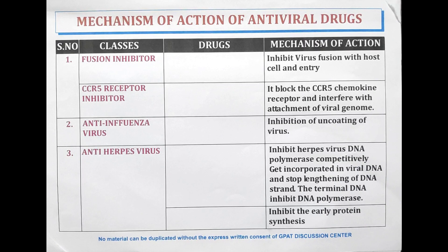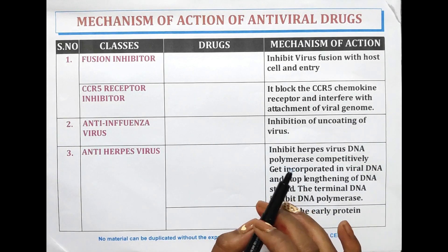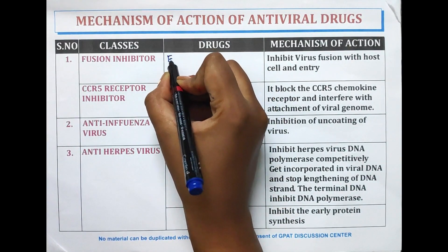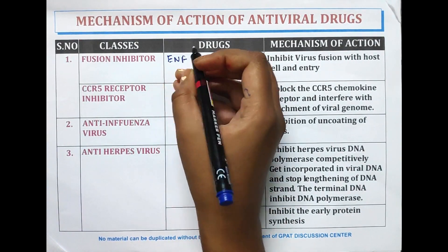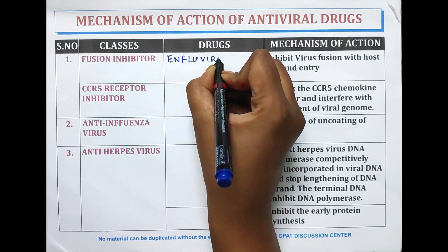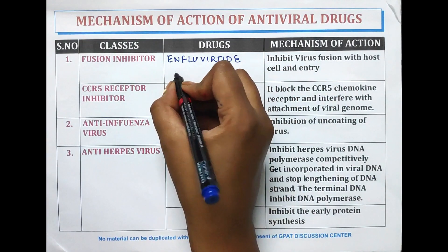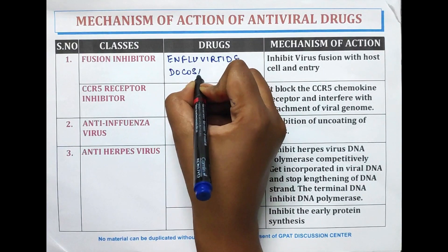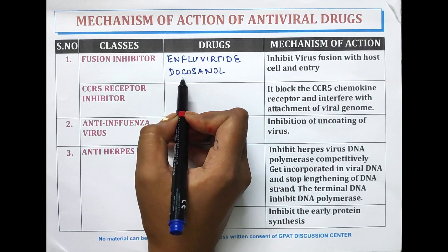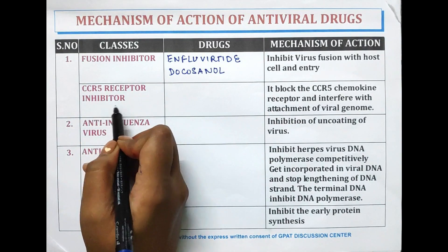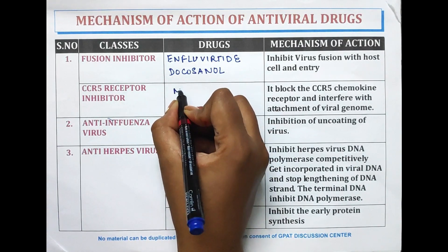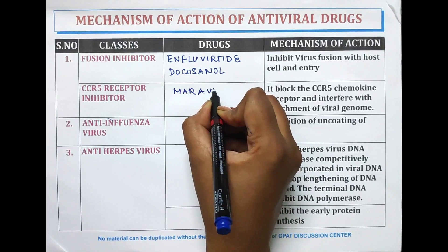The drugs which act on the virus: first are fusion inhibitors — enfuvirtide and docosanol. These are the fusion inhibitors. Along with this, the CCR5 receptor present in the cell membrane wall is blocked by maraviroc.